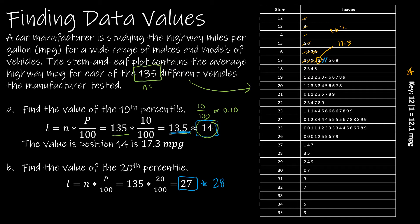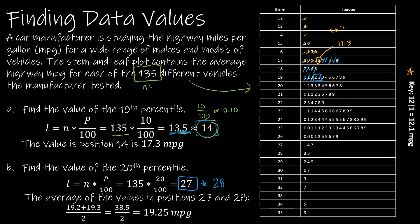We already counted to 14, so continuing: 15, 16, 17... 26, and then here's 27 and 28. So I have 19.2 and 19.3, and I'm going to average those to get 19.25 miles per gallon. What does that mean? That means 19.25 miles per gallon is greater than or equal to 20% of our data.